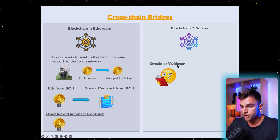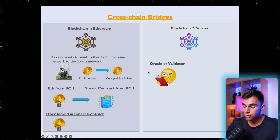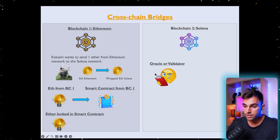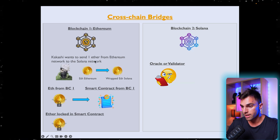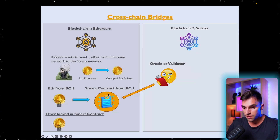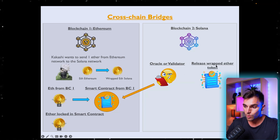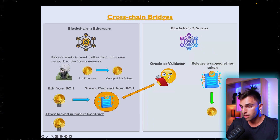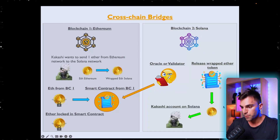On the Solana network, we've got the Oracle or Validator. The function of this Oracle or Validator is to look at the smart contract and see when an asset has been locked up — specifically, when someone has said they are prepared to lock their asset on Ethereum so that they can have it on Solana. Once the Oracle has certified that this person has, in fact, locked the asset in the smart contract, it will release that token on the Solana network, and that will go to Kakashi's account.